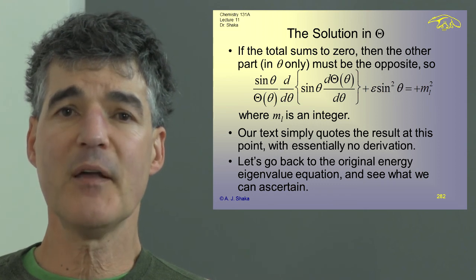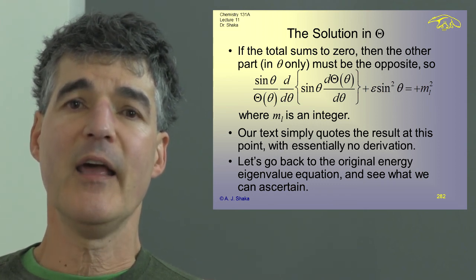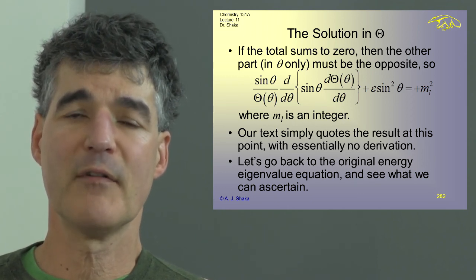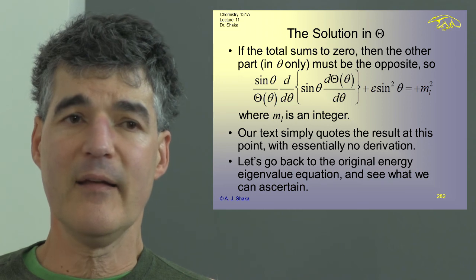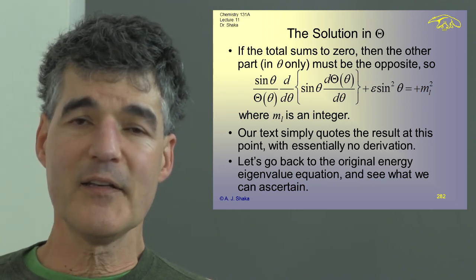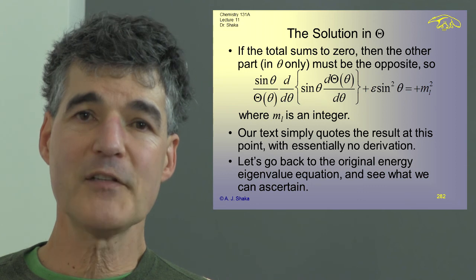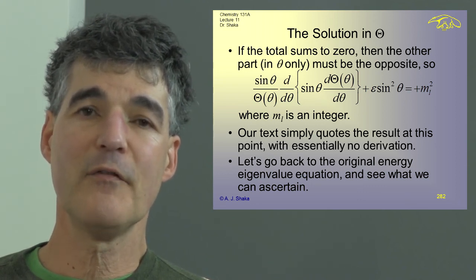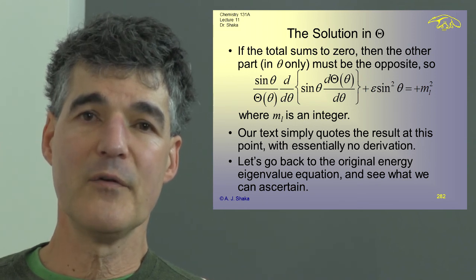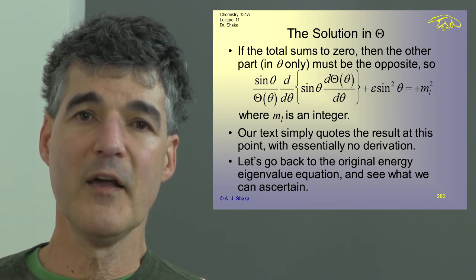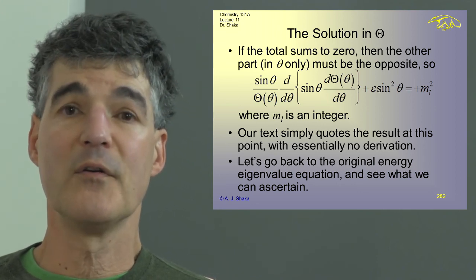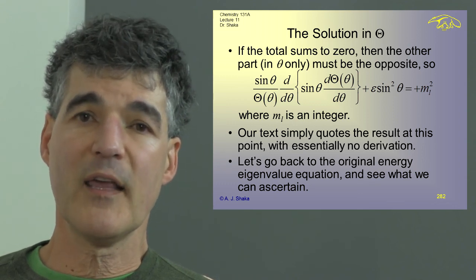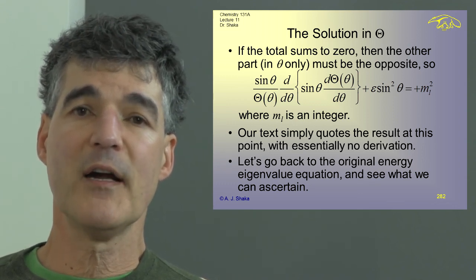At this point, the text kind of dodges everything and just says, well, mathematicians seem to know how to solve this kind of equation. While that's true, I'd like to do a little bit of guesswork as to how we might try to solve this kind of equation and see if we can get a little bit more insight into what the solutions are looking like by trying to do it. One way is to say maybe it's sort of like a particle on a ring again and try similar kinds of things.